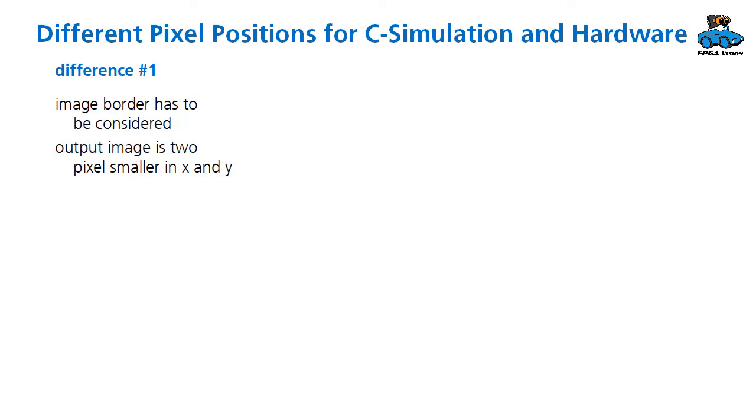The second difference is that the position of input and output pixel are not exactly the same. Let's have a look at the diagram to see why this is the case. We do processing when we receive the last pixel of the 3x3 matrix, which is this current input pixel. However,